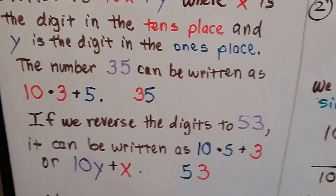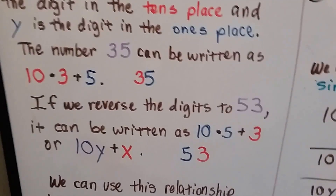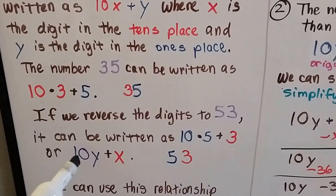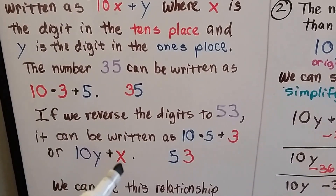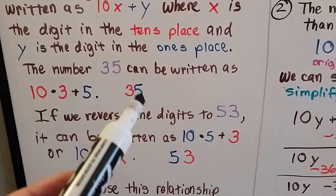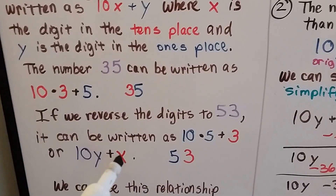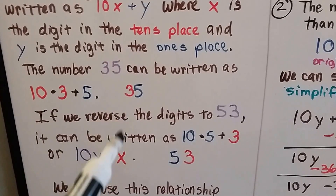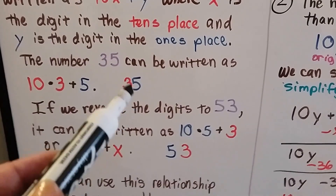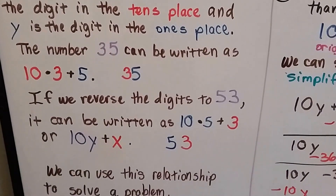And we can reverse this. The 35 can be flipped around to be 53. That way, when we do the equation, instead of 10x plus y, we now have 10y plus x. Because now, what was in the ones place — the 5 — is going to be multiplied by 10 to be a 50, and we'll add the 3 that used to be in the tens place to be in the ones place. So we can flip 35 around to be 53 with this equation.